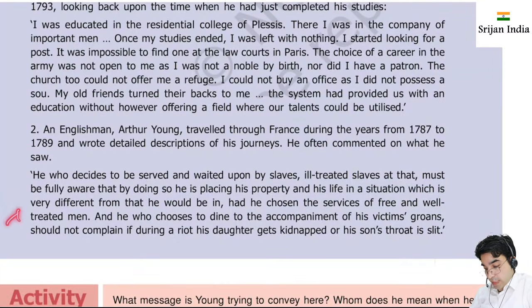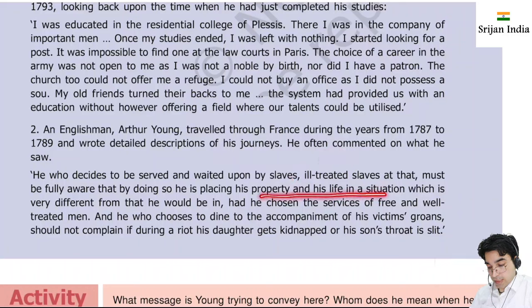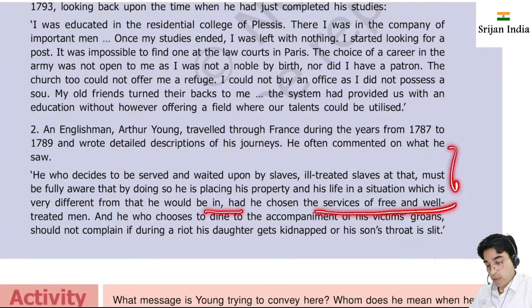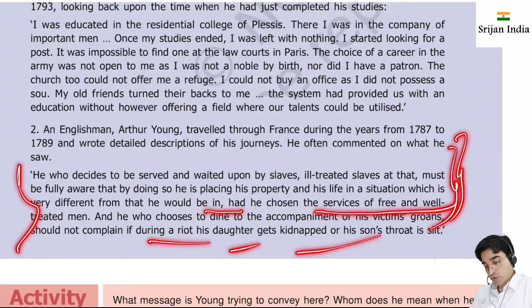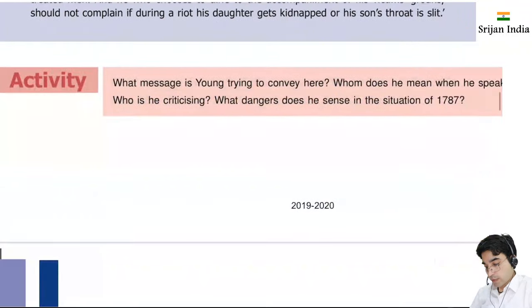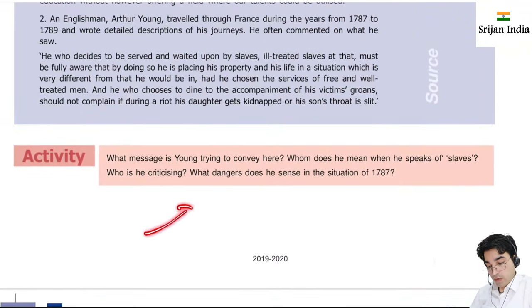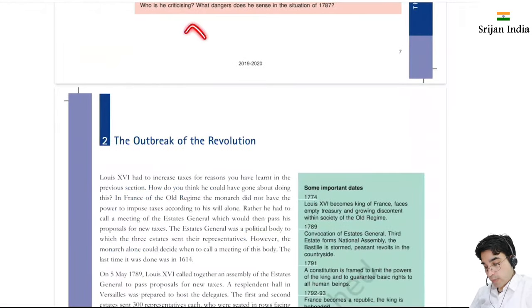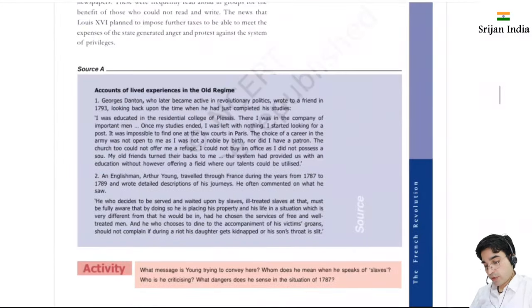He writes: 'He who decides to be served and waited upon by slaves - ill-treated slaves at that - must be fully aware that by doing so he is placing his property and life in a situation very different from what it would be had he chosen otherwise.' He is saying there were quite serious issues in that society.